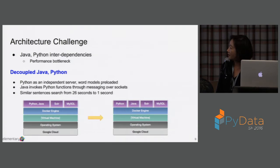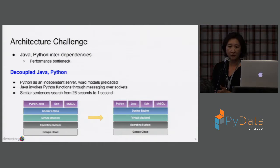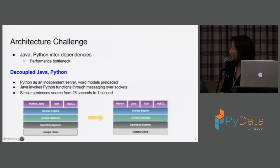The second architectural challenge: we were running pretty okay for a while until we hit some performance problems. We had Python and Java in the same container, because Java was explicitly making system calls to Python whenever it needed to call a Python function. There is a problem with that, especially when our word model gets really large. We hit a roadblock basically — the similarity search was costing us 26 seconds to run. That's totally not acceptable in real time.